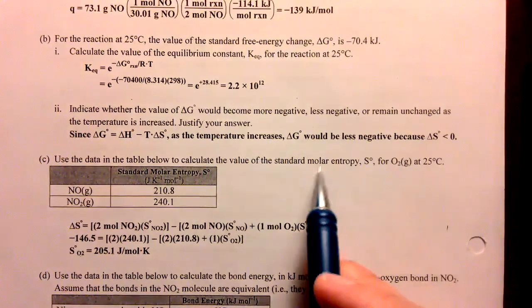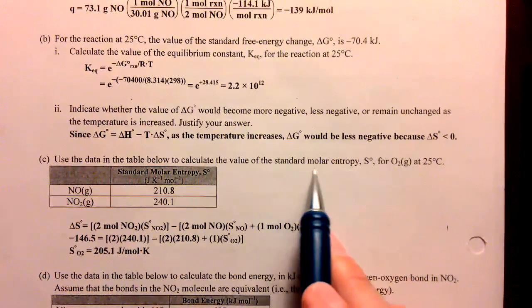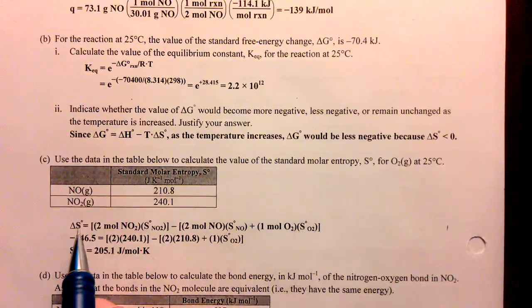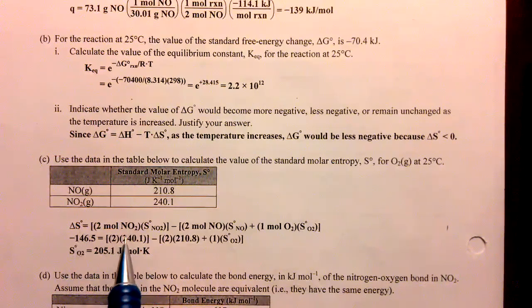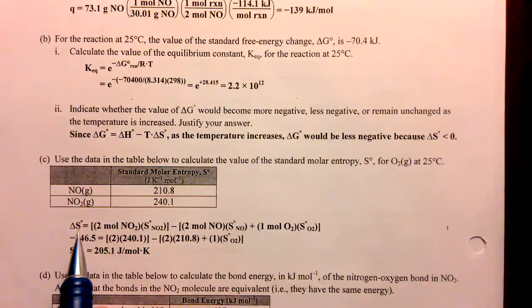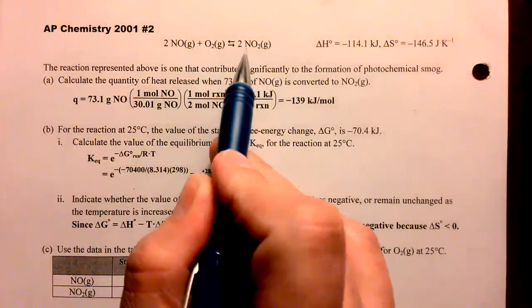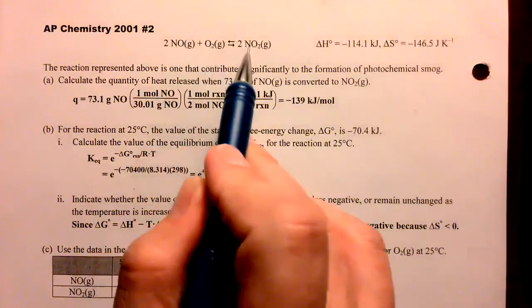On C, we're asked for the standard molar entropy for O2, and that might seem like that's maybe even impossible, but the standard delta S will be the standard entropy of the products minus the reactants, remembering that this is rated per mole of reactions run. When we run the reaction one mole of times, you need two of these and one of those and two of those.